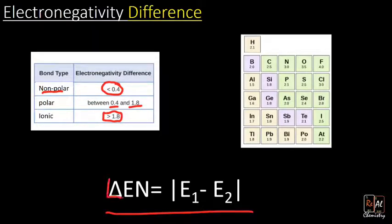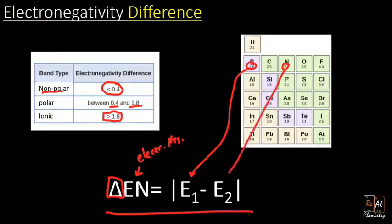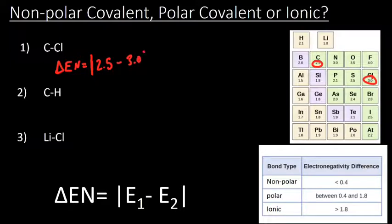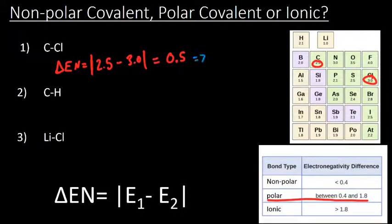Here's the equation: delta-EN equals the absolute value of EN1 minus EN2. It doesn't matter which atom you assign as E1 or E2. For our first practice problem, C–Cl: we grab carbon's electronegativity of 2.5 and subtract chlorine's value of 3.0, giving us negative 0.5. The absolute value makes that 0.5. Looking at our chart, that falls between 0.4 and 1.8, so this is a polar bond.